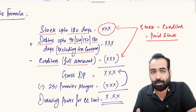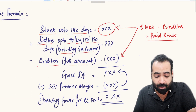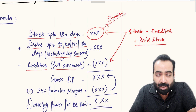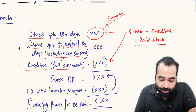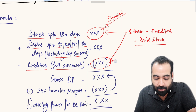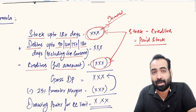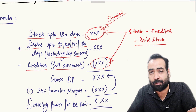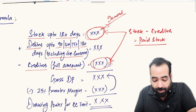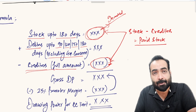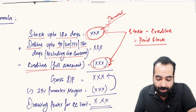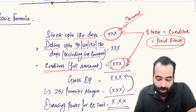A question that may come up in your career: what is paid stock? The stock is the amount you have invested in buying goods, raw material, or finished goods. The support given by creditors in buying that raw material — if you deduct that support from the total investment, the net amount remaining is the stock for which you have actually paid. Stock minus creditors is called paid stock.